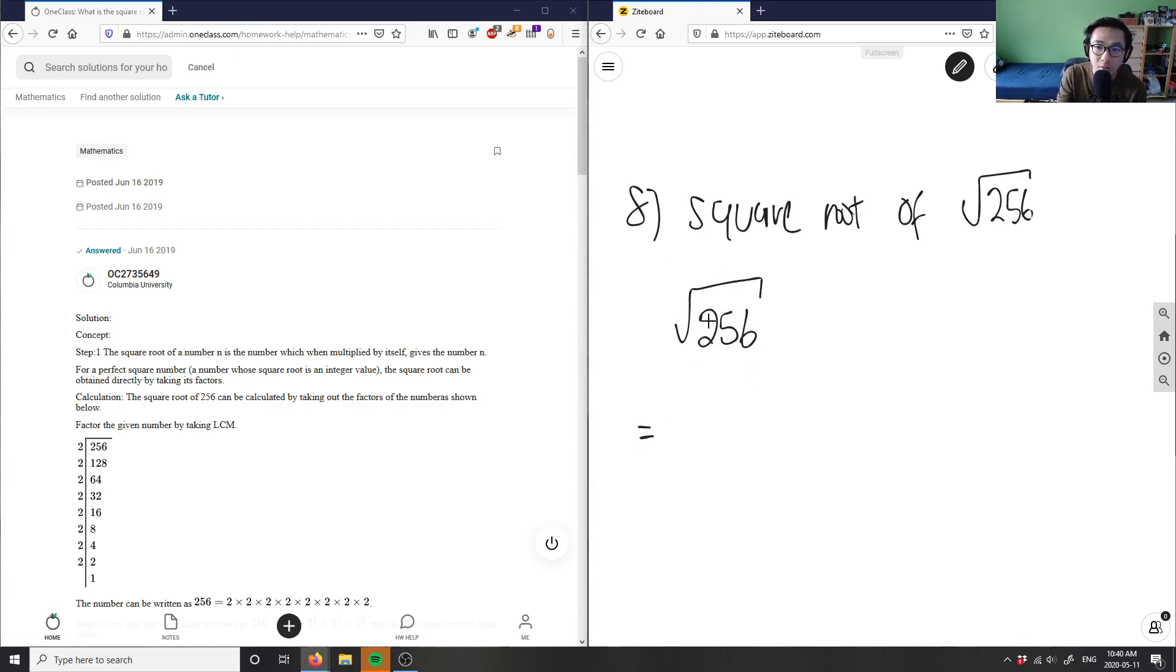This would be square root of 2 multiplied by square root of 128, since 256 divided by 2 is 128. I can do this again: 128 divided by 2 would be 64.